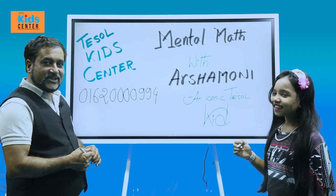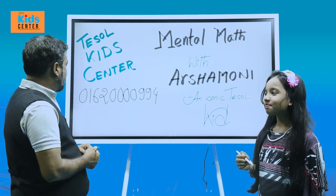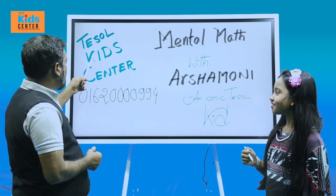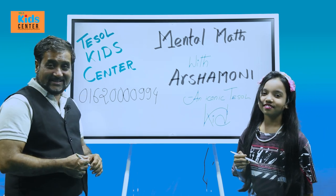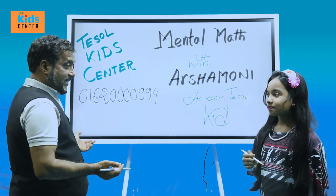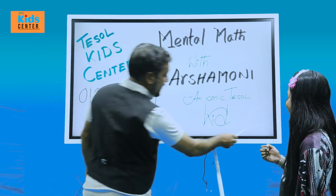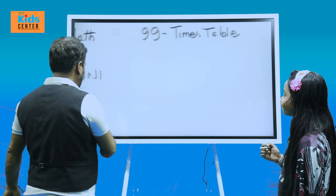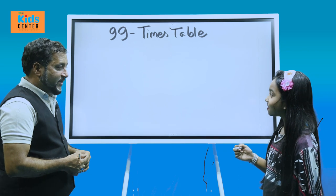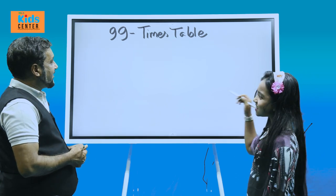Actually, yeah, dear viewers, you'll see why she is. And, yeah, the organization is called the TESOL Kid Center. So, let's begin, right? Okay. Let's see what we can learn today. What do you see here, Arshamoni? Well, it's 99 times table.